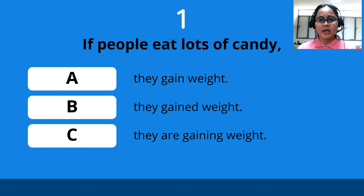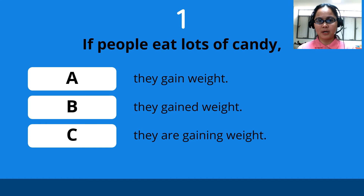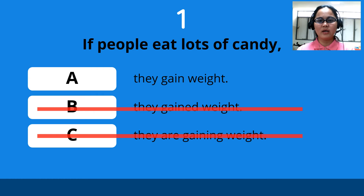Number one: if people eat lots of candy — A. they gain weight, B. they gained weight, C. they are gaining weight. The answer is A: they gain weight.